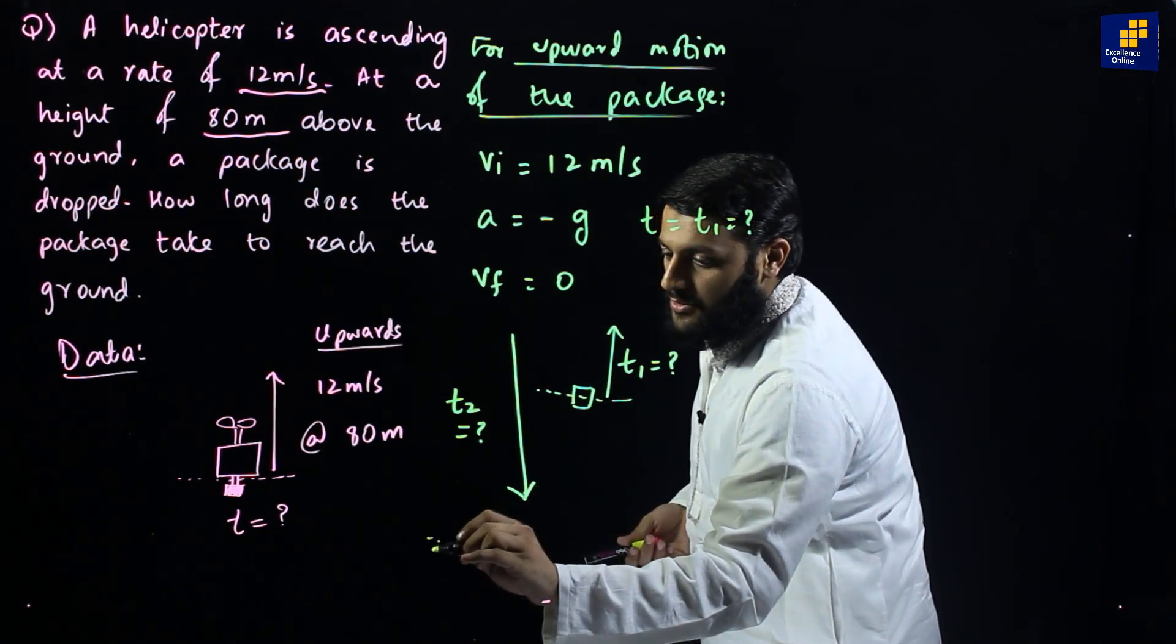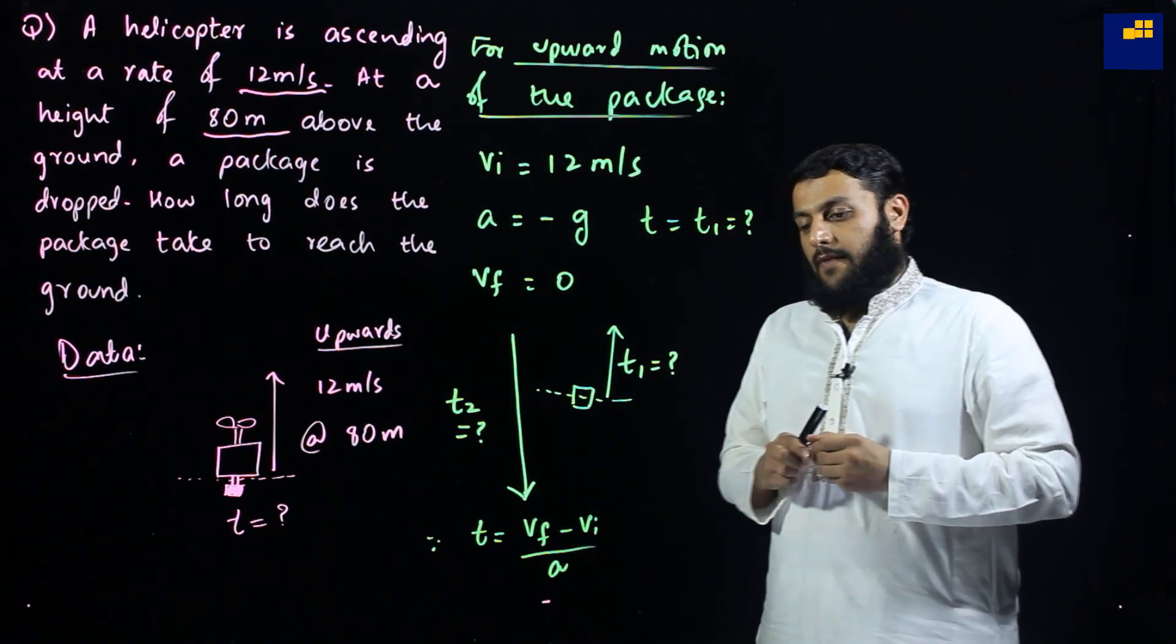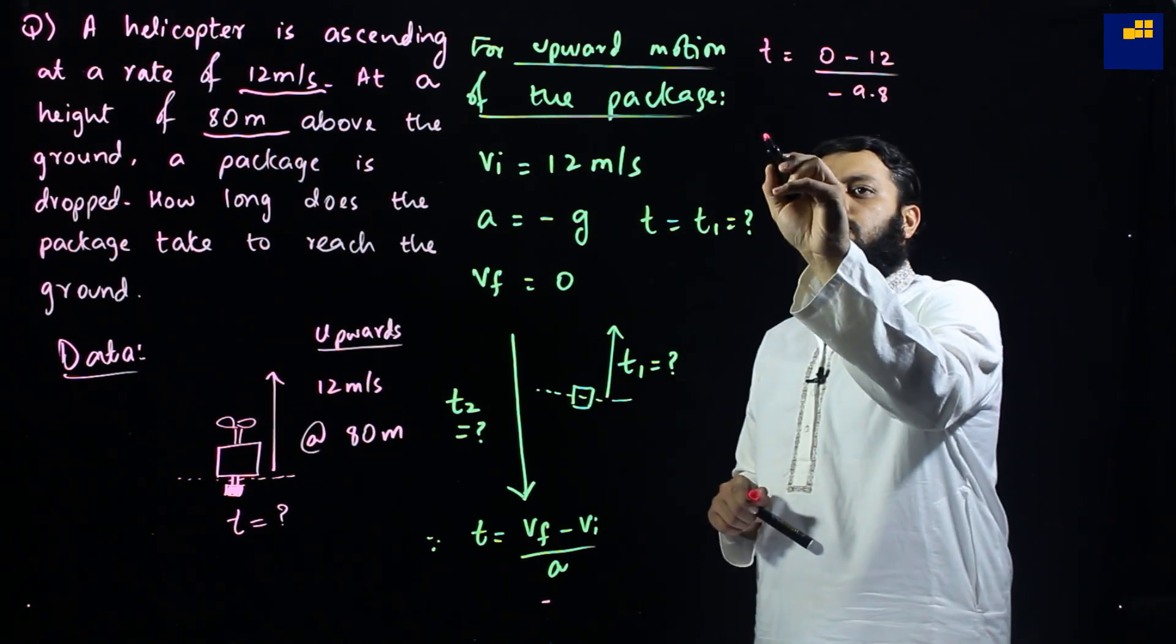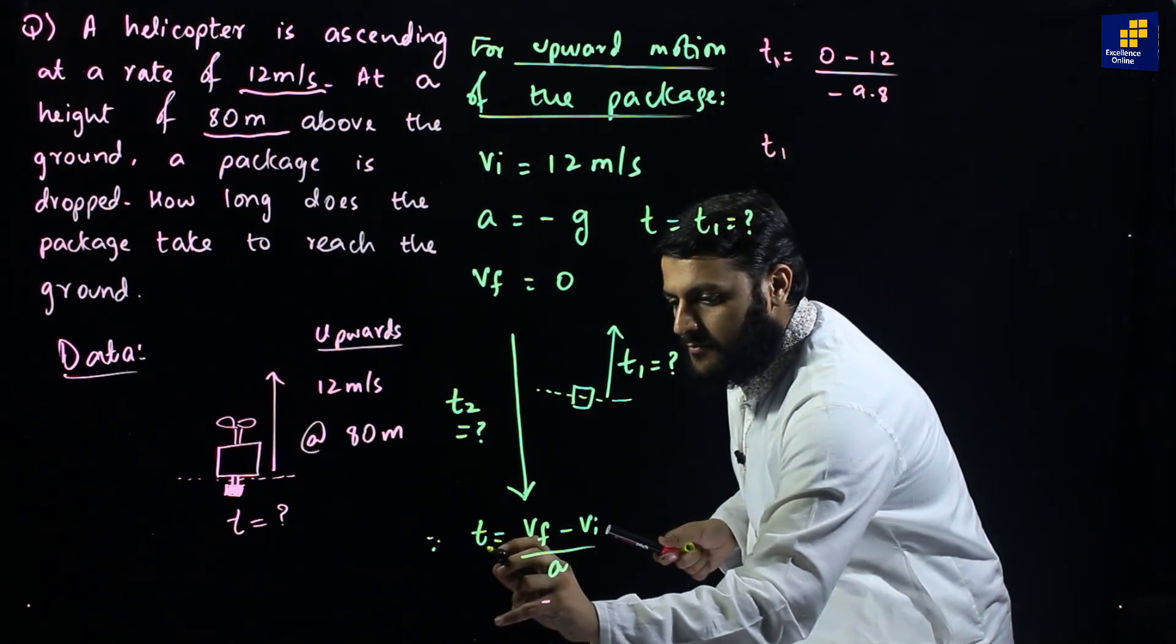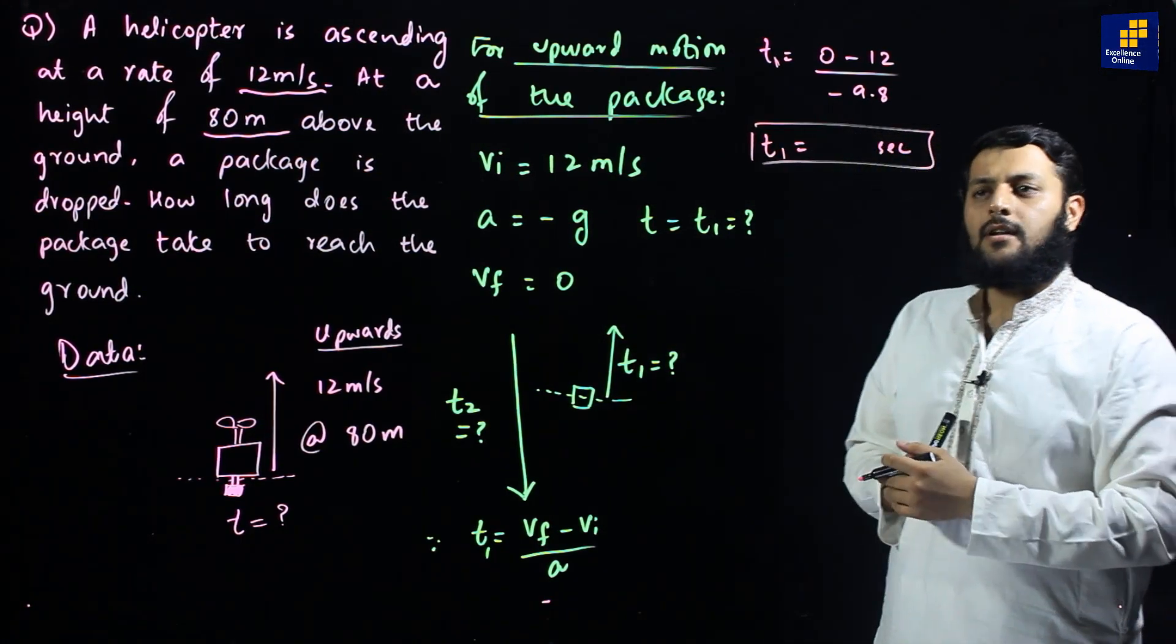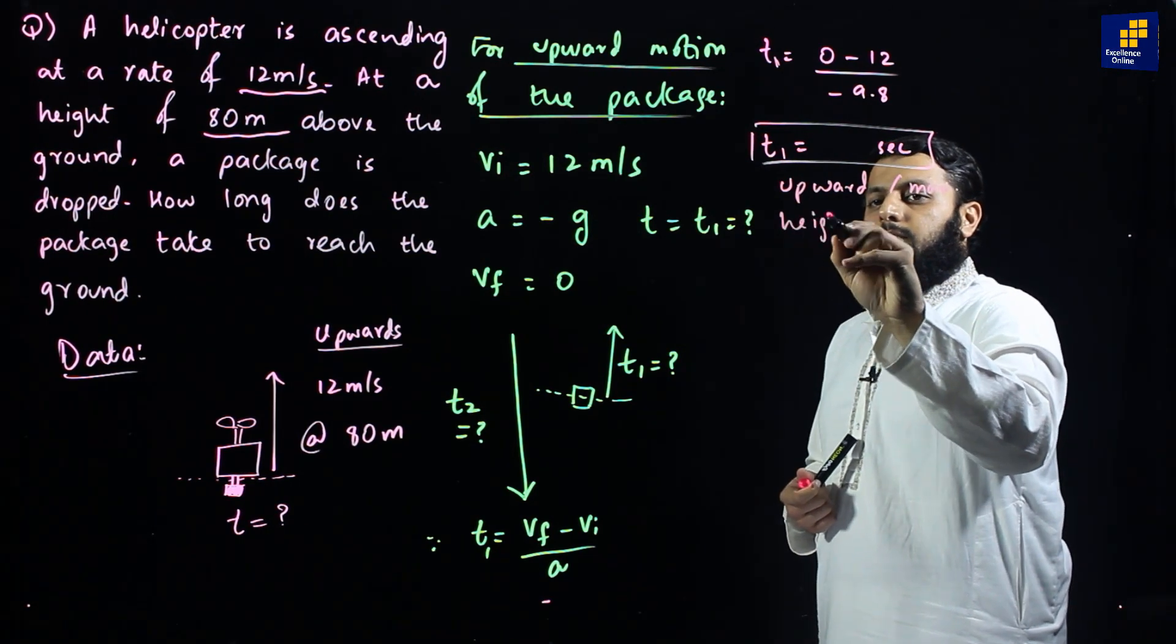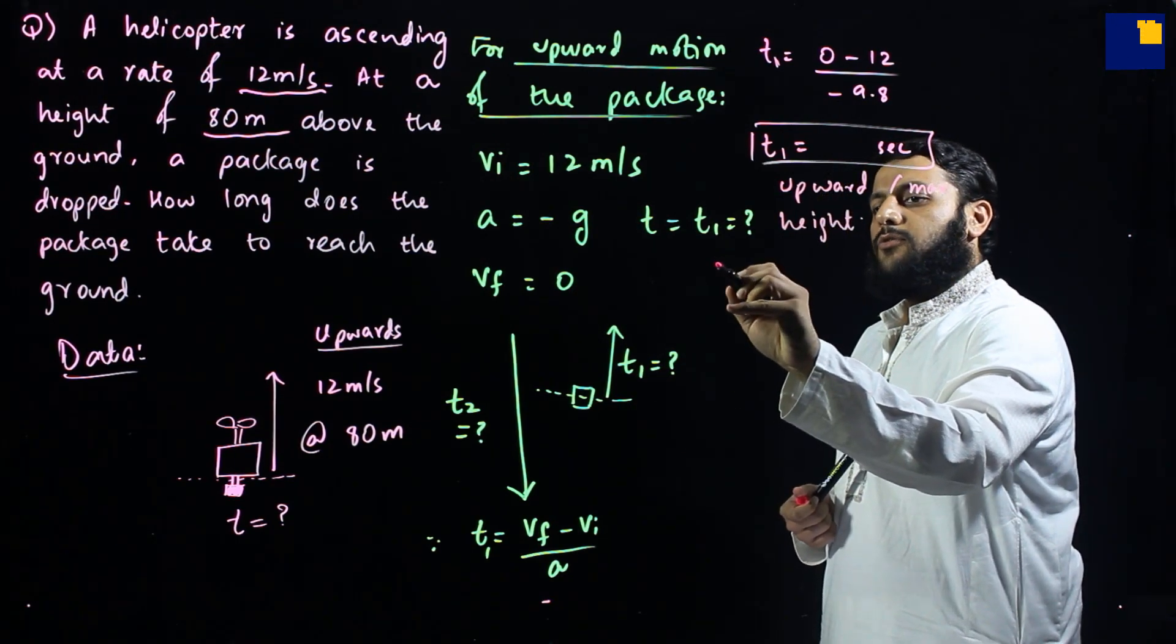Using first equation of motion, it says t equals vf minus vi over a. So I can write easily t equals vf which is 0 minus 12 over acceleration which can be either taken as minus 9.8 or minus 10. So you get your t1 in seconds. Keep this thing in your mind students that this t1 is only time that package takes to reach the upward maximum height.